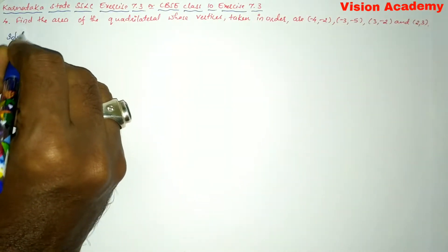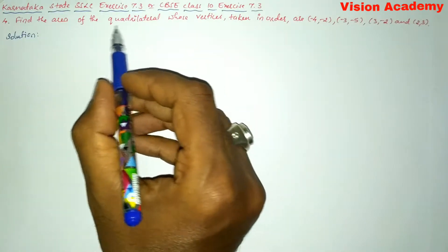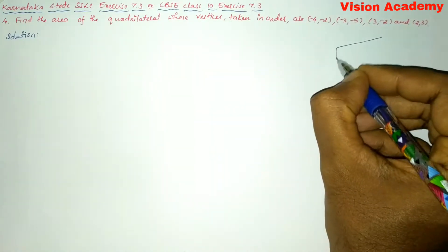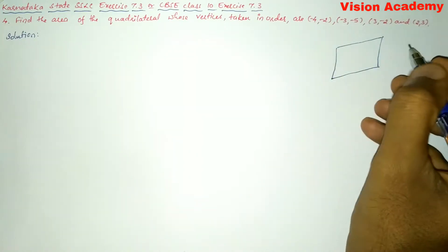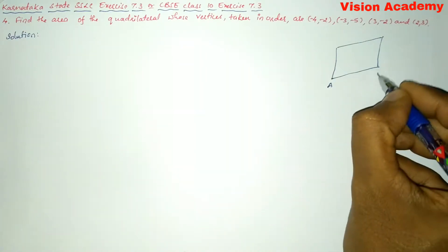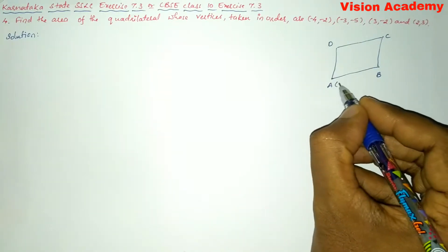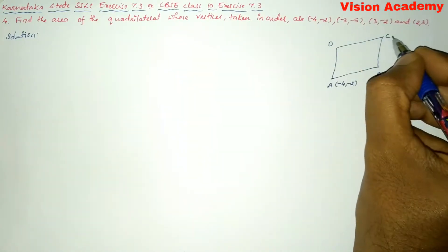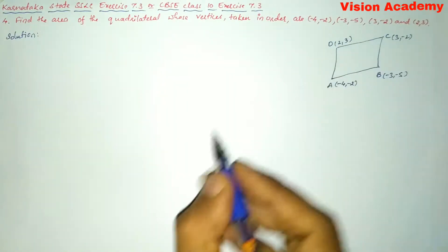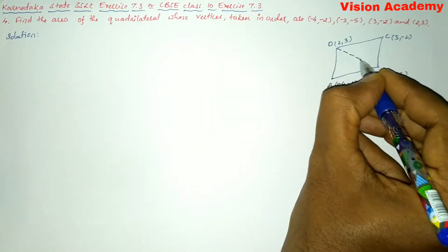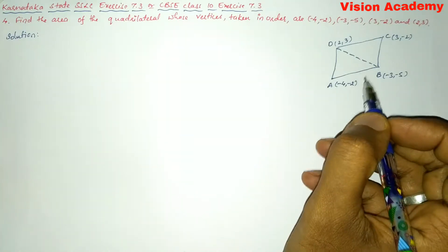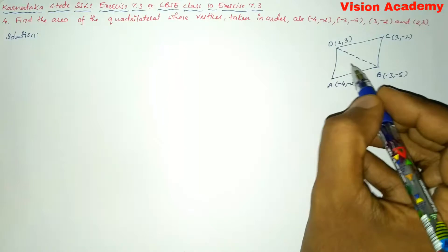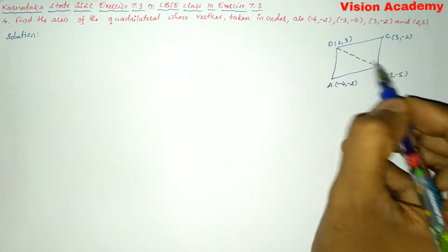Now let us find the solution for the given problem. They have asked us to find the area of a quadrilateral, but we know how to find the area of a triangle. So let us draw a quadrilateral which has 4 sides and name the vertices as A, B, C, D. Let A = (-4, -2), B = (-3, -5), C = (3, -2), and D = (2, 3). We draw a diagonal to get two triangles: triangle ABD and triangle BCD.